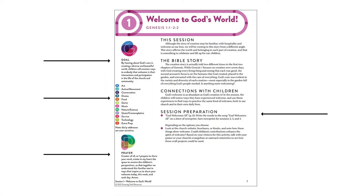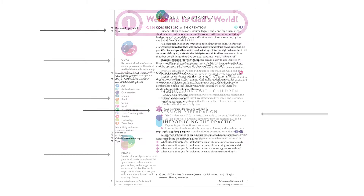Now let's talk about the session overview. This page has great information about the session for the leader — there's a goal, a prayer, activity symbols, and a great section on session preparation covering things you need to do before you start the session. Within the actual session flow, supplies are listed in the sidebar activity by activity, so you know exactly which supplies you need for a particular activity and which ones you don't have to worry about if you skip it.